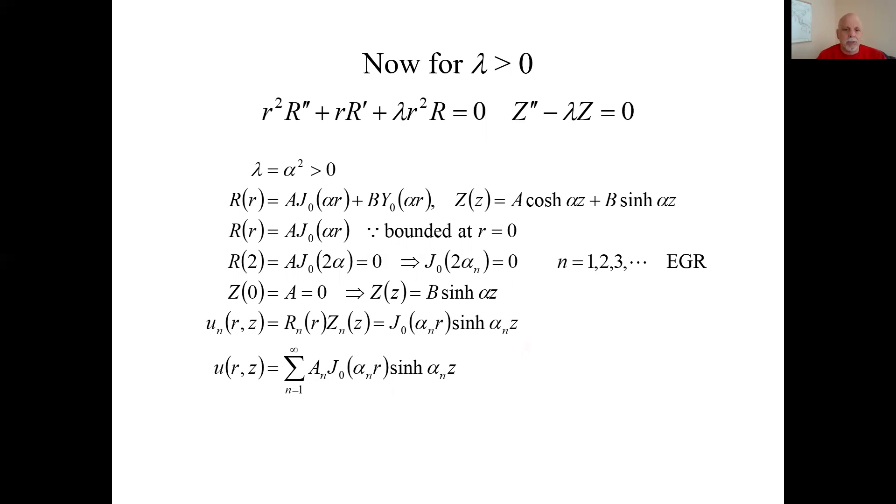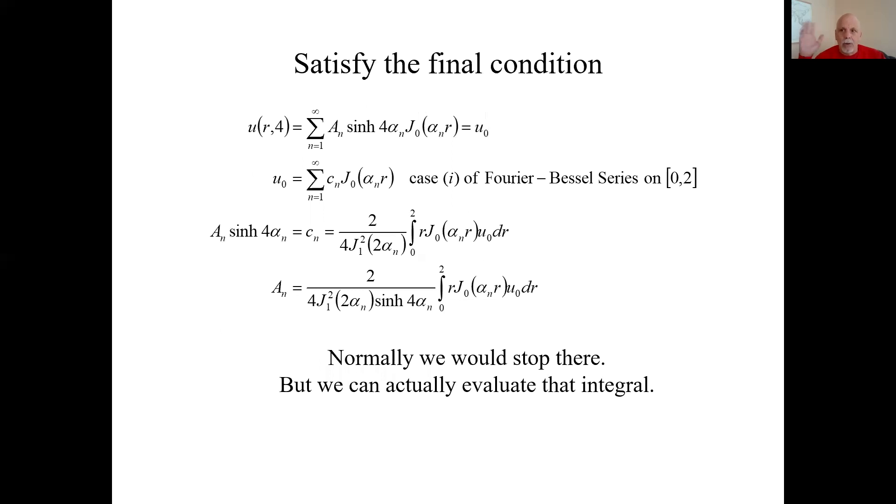I'm going to have to do this in two pieces. So now we have to apply that very last boundary condition, which was the temperature at the top of the cylinder. That was where z equals four. So here's the situation. At z equals four, here's our solution. It has to equal this constant. So we have to expand this constant using some kind of series. This says it's a Fourier-Bessel series. And because of our eigenvalue generating relationship, we use the case one way to do that.